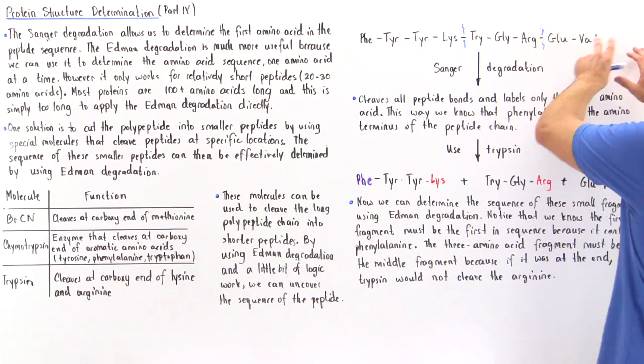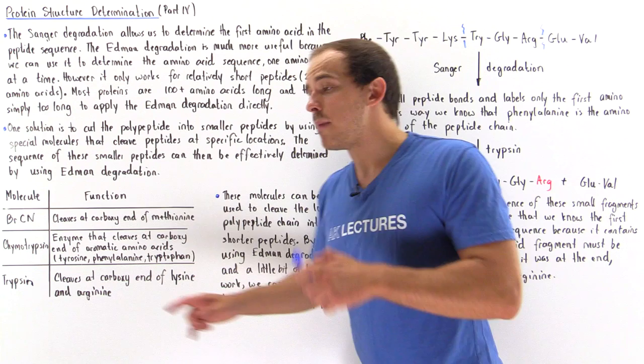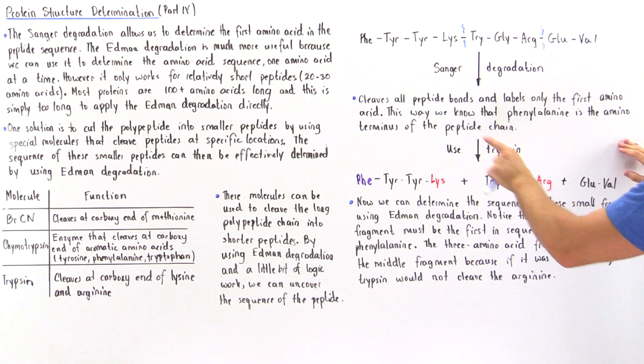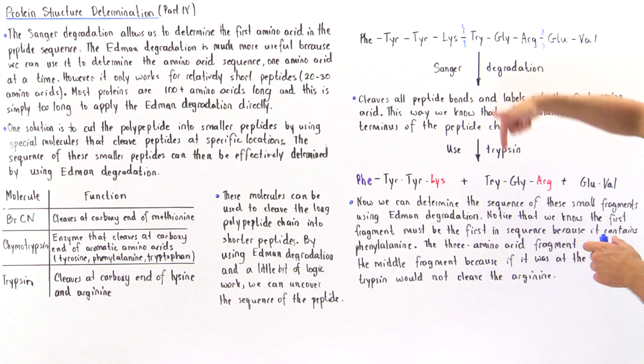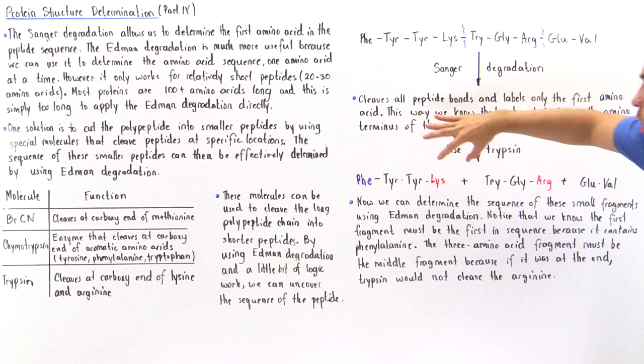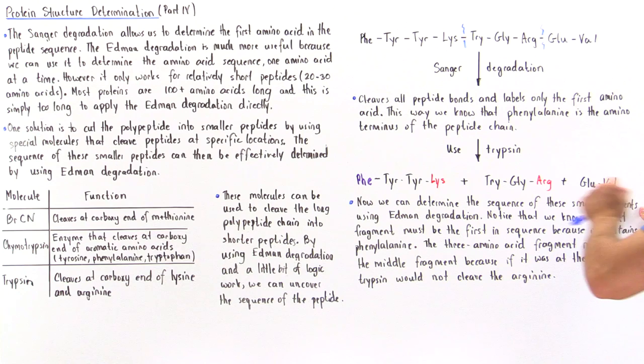Now let's take this same peptide and mix it with trypsin. Trypsin cleaves at the carboxy end of lysine and arginine, so it cleaves at two locations, breaking the polypeptide into three smaller peptide molecules. From this step we know that fragment number one must come first, because it is the only fragment that contains phenylalanine as amino acid number one.